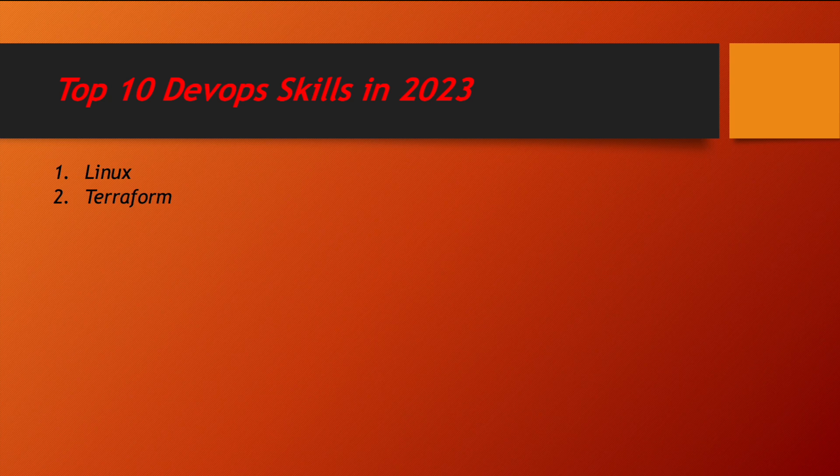After Linux, Terraform is one of the most famous and open source tools. What I mean by open source — Terraform is free of cost, meaning in a company you don't have to pay anything. It's open source, you can download Terraform and start using it in your organization. Terraform is mainly used to provision your infrastructure, means to create your infrastructure.